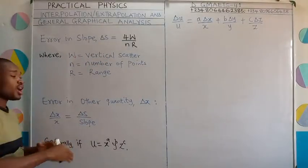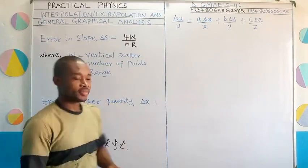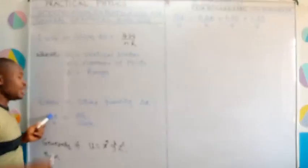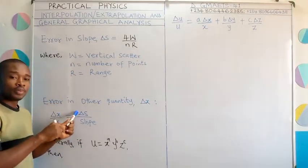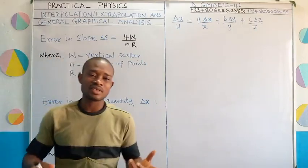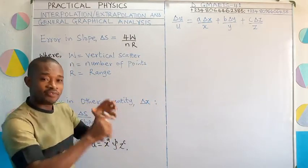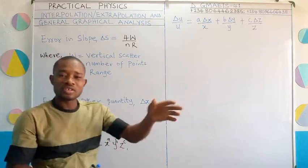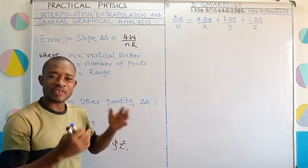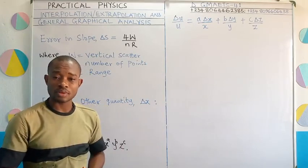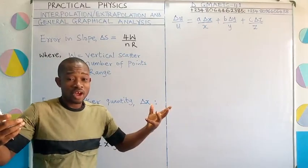Moving on to error in any other quantity: one can obtain the error in any other quantity by linking it to error in slope. The relationship is: error in that quantity divided by its value equals error in slope divided by slope. For example, for acceleration due to gravity, error in g divided by the value of g equals error in slope over slope. The same relationship applies for intercept: error in intercept divided by the intercept value equals error in slope divided by slope.